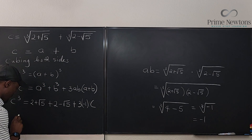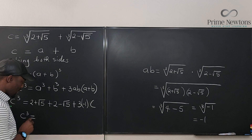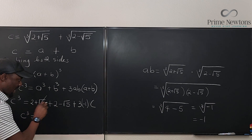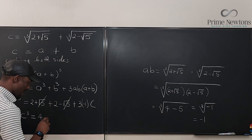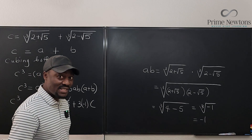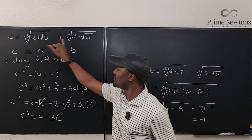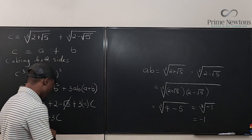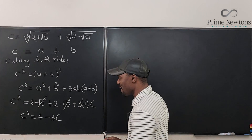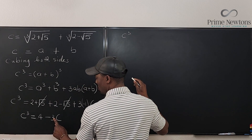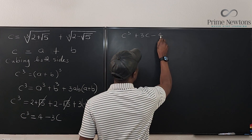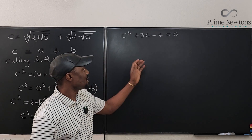Substituting AB = −1 into our equation: C cubed equals (2 + √5) + (2 − √5) plus 3 times (−1) times C. The √5 terms cancel, leaving C cubed equals 4 minus 3C. Rearranging, we get C cubed plus 3C minus 4 equals 0. That is the equation we need to solve to find C.